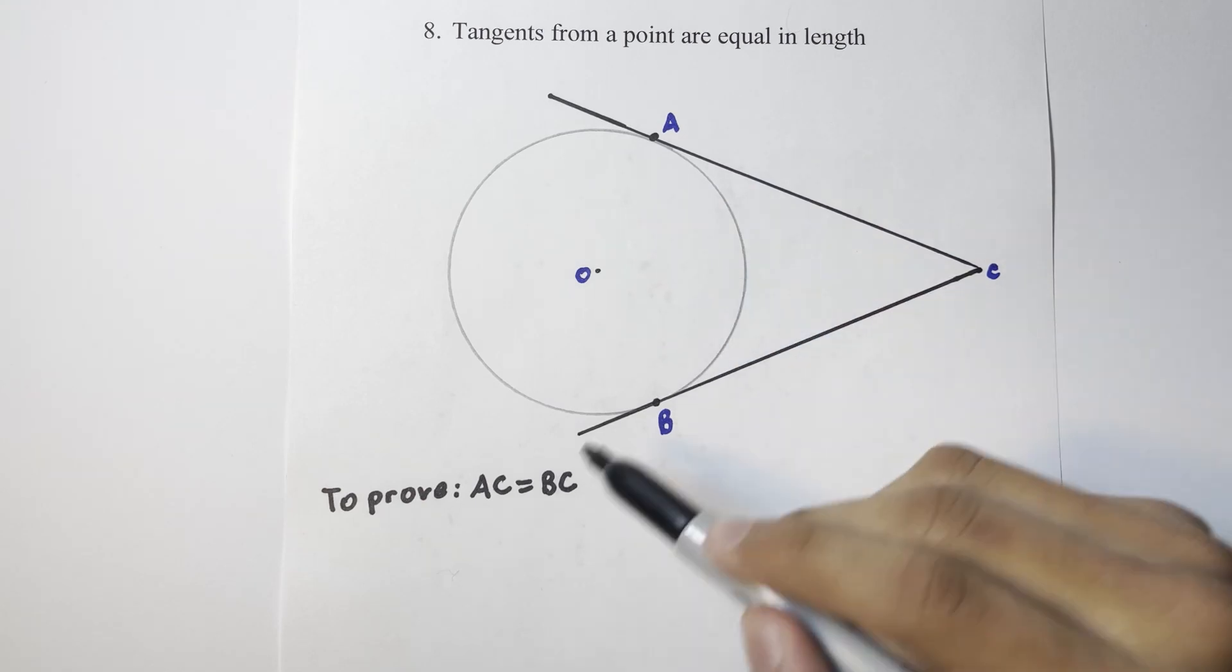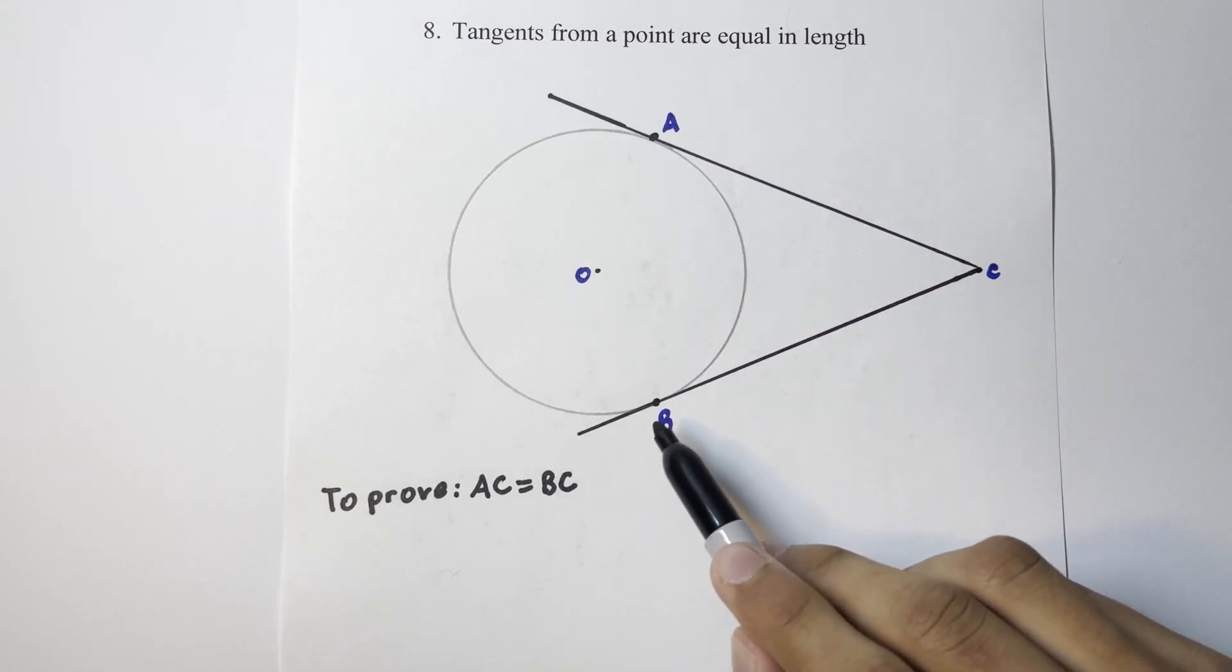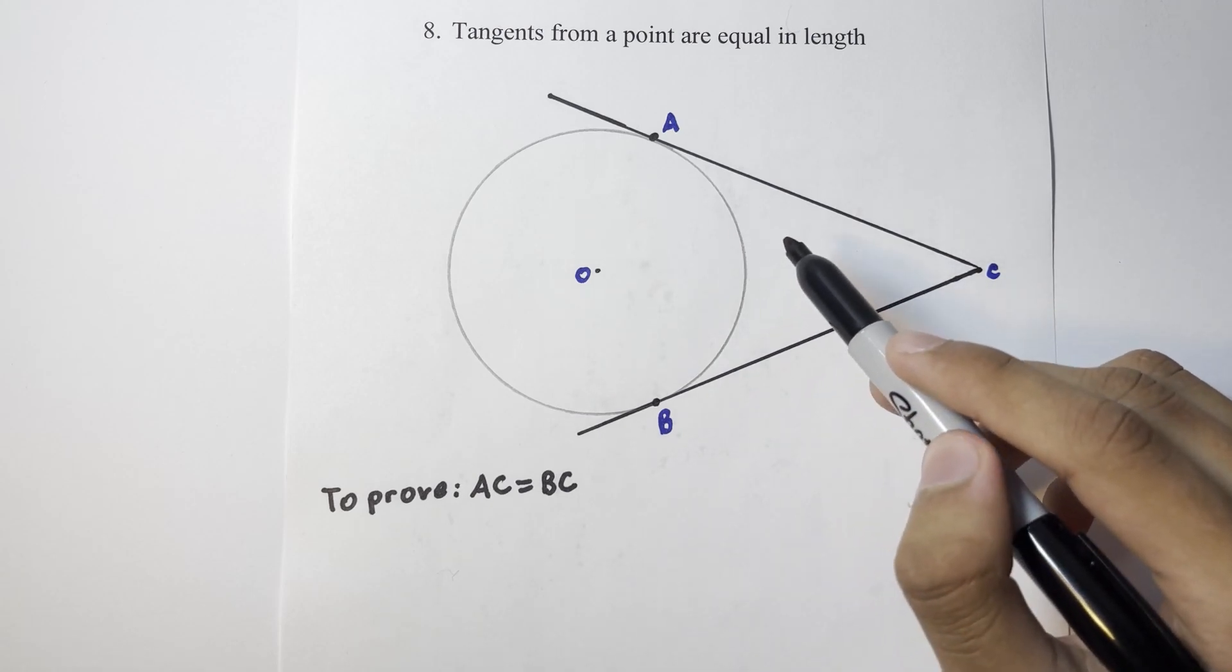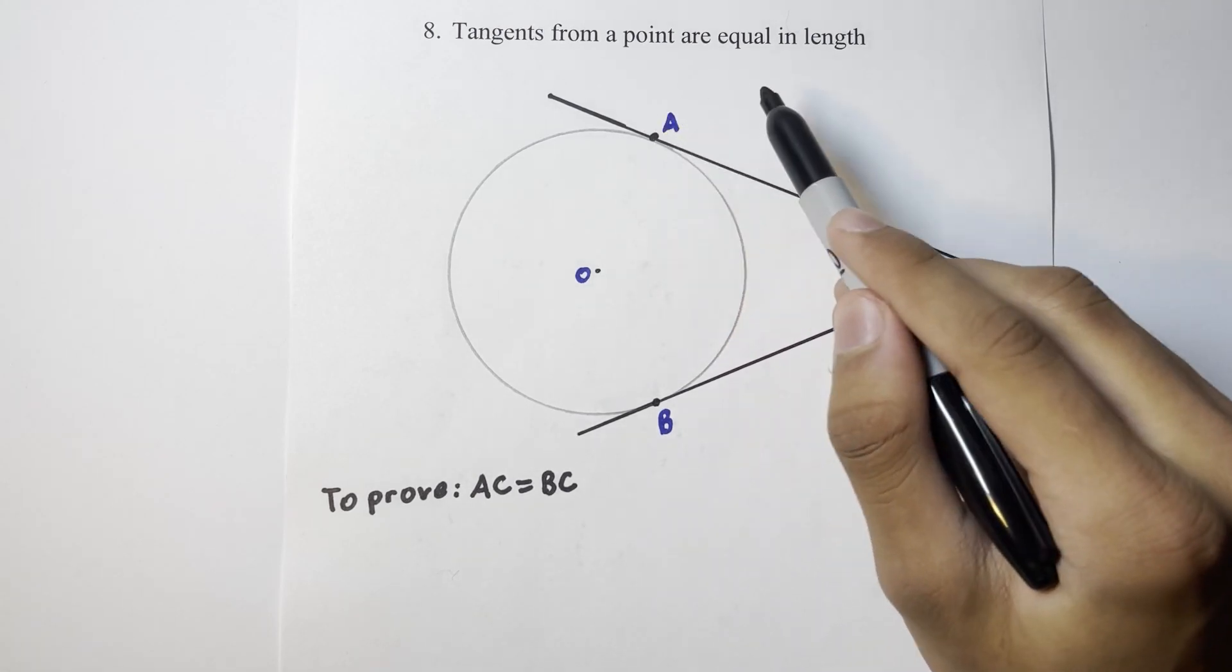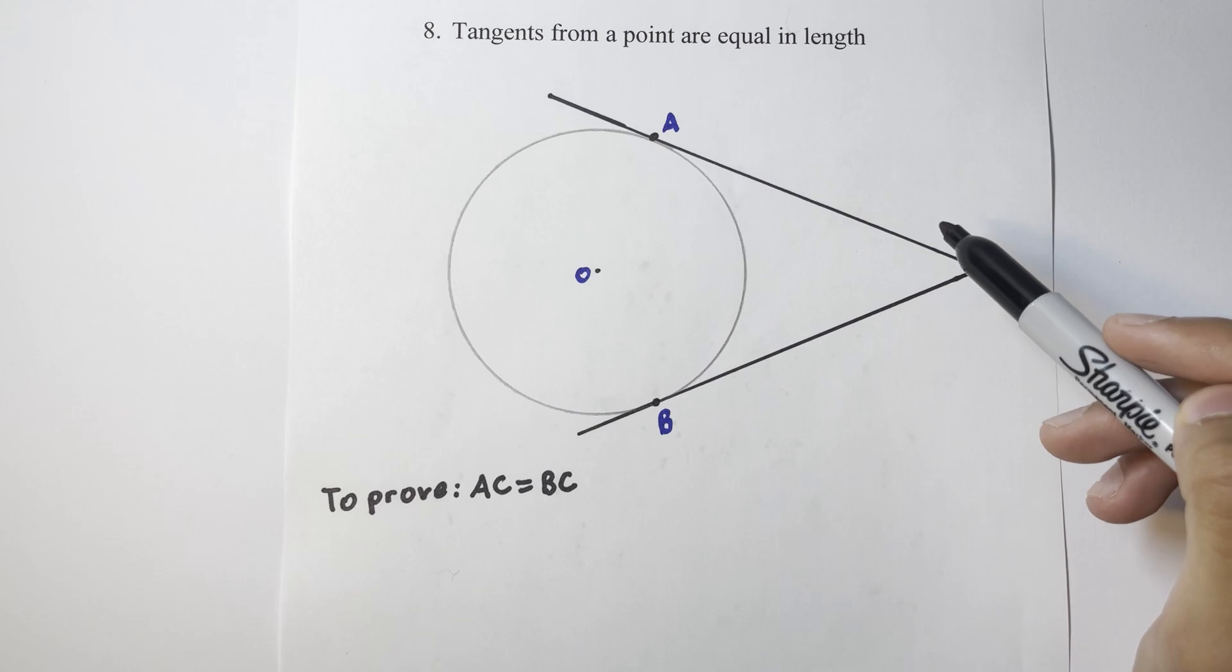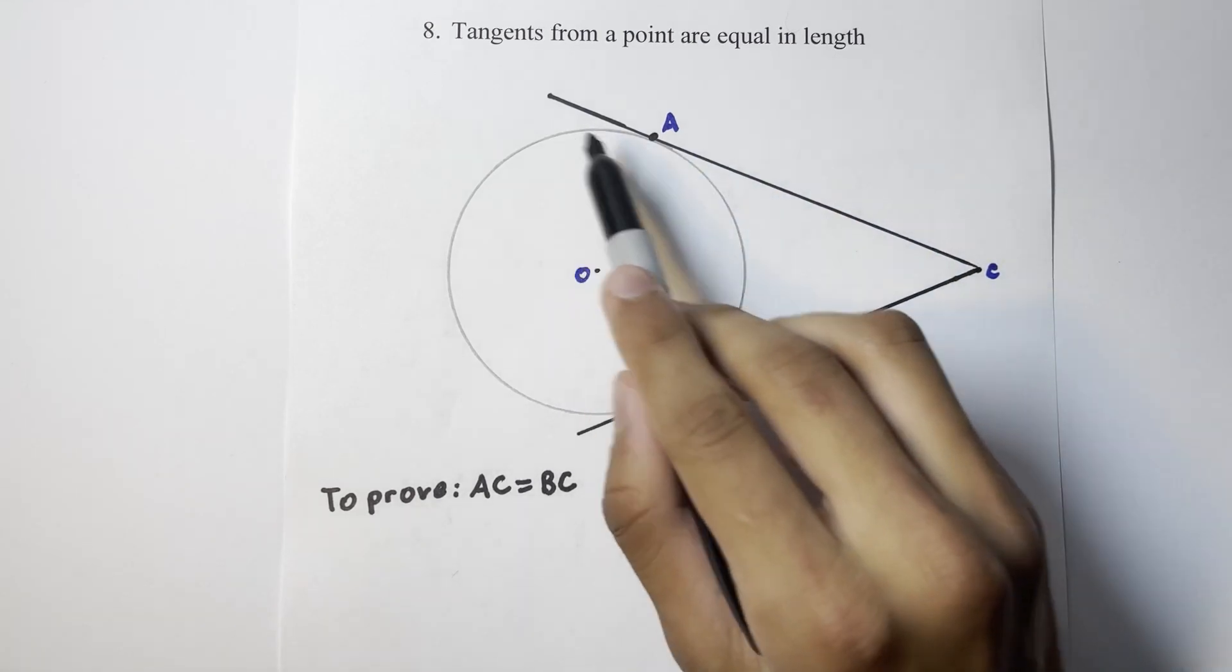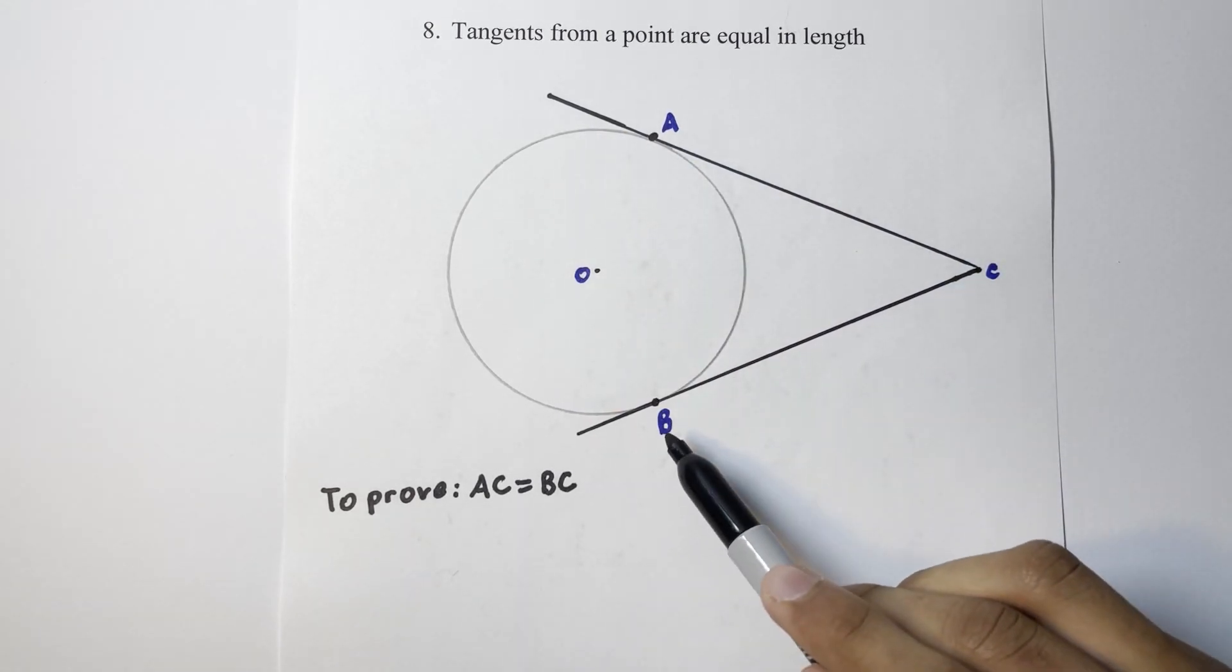Here, to prove the theorem, we want to prove that the line AC is equal to the line BC. Keep in mind that when we're talking about tangents from a point which are equal, we only talk about the line up until the point of tangency. We can clearly see that this first tangent appears to be longer than the second down here.